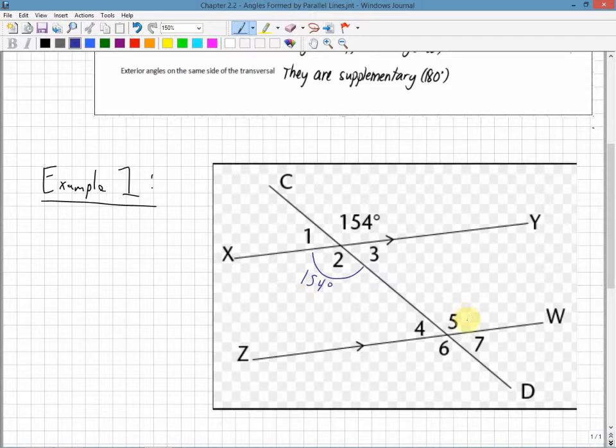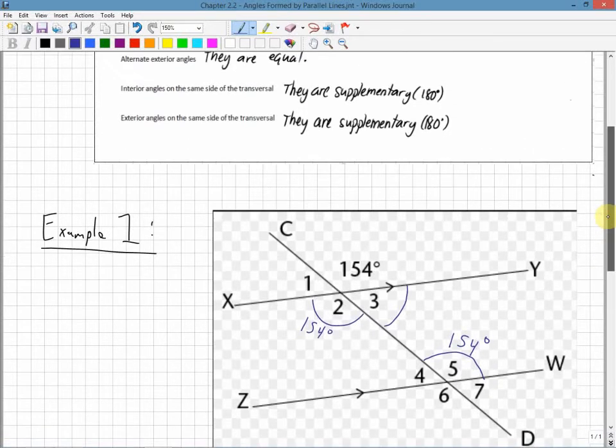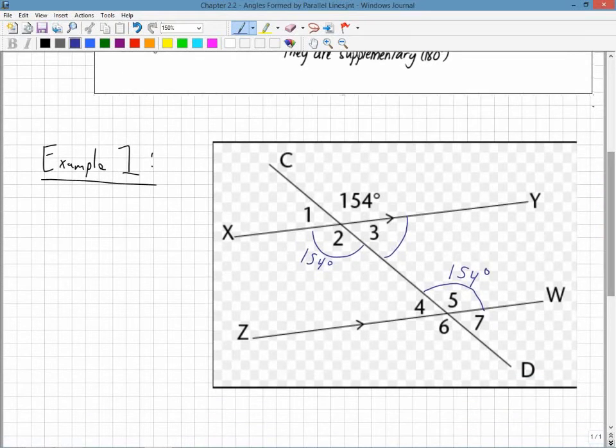This angle over here, 5 and 154, these are corresponding angles, so I know they're going to be equal. That is also going to be 154 degrees. Angle 5 and angle 3 in here are interior angles on the same side of the transversal, and they're supplementary. They add up to 180 degrees. So I know that angle 3 up here, if I use my calculator, I would get 24 degrees.